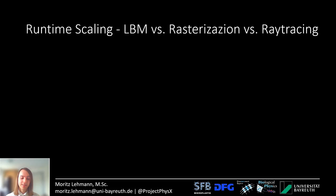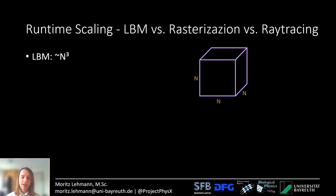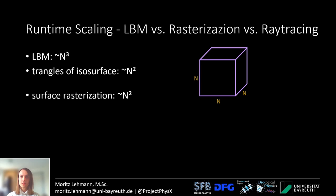Now let's look at the choice of rendering algorithms and how their performance scales. Lattice Boltzmann scales with n³, where n is the side length of the cubic simulation domain. The number of triangles on the isosurface is approximately n². Surface rasterization draws all of these triangles, so it also scales approximately with n².